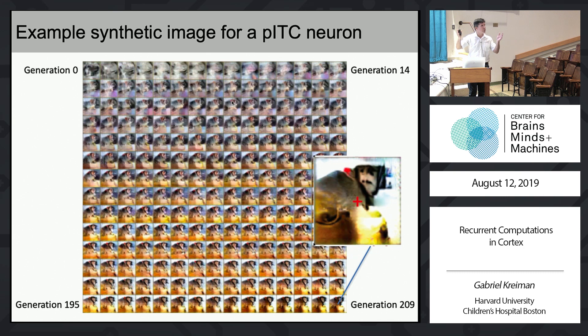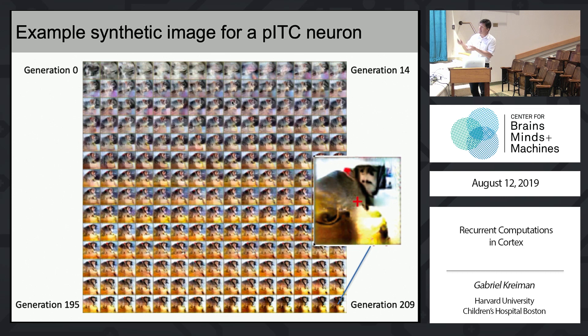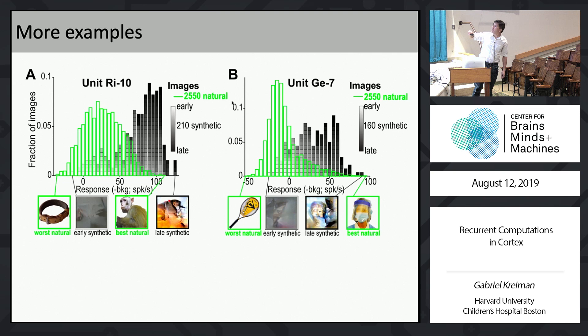Here are two more examples. In green I show the distribution of firing rate responses after background subtraction in response to 2,550 natural images, and in gray the responses to the images we evolved. In one case, we did not manage to get a picture better than all 2,550 natural images — we got something very close in terms of firing rates, but not necessarily better. The monkeys are passively fixating. There's no behavior, just fixation. We are not selecting for high spatial frequencies in the images — the algorithm can evolve to whatever it is, but the early synthetic images are noise, and overall they may have lower frequency content.